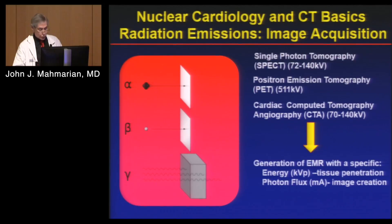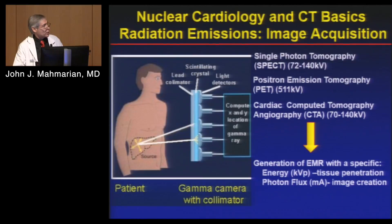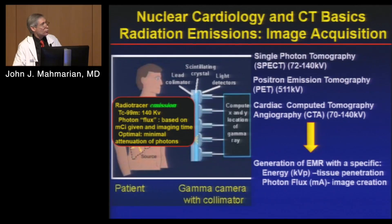When we think about nuclear cardiac imaging, we inject a radio tracer. Emissions from the organ hit a lead collimator that streamlines the photons so they're parallel. Then we have a crystal which identifies the photons hitting, and it goes through a computer array assessing the scintillation caused by the photon — and we get a picture. With radio tracers, we're looking at emissions, and usually with the heart we use technetium-99m, which is 140 kV.